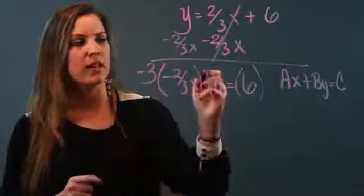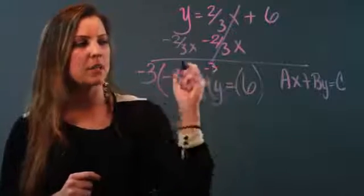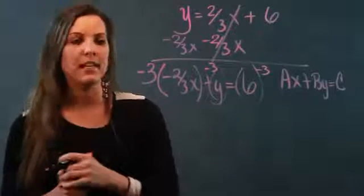So that's going to get multiplied by negative three. This is going to get multiplied by negative three. And the six is also going to get multiplied by negative three.